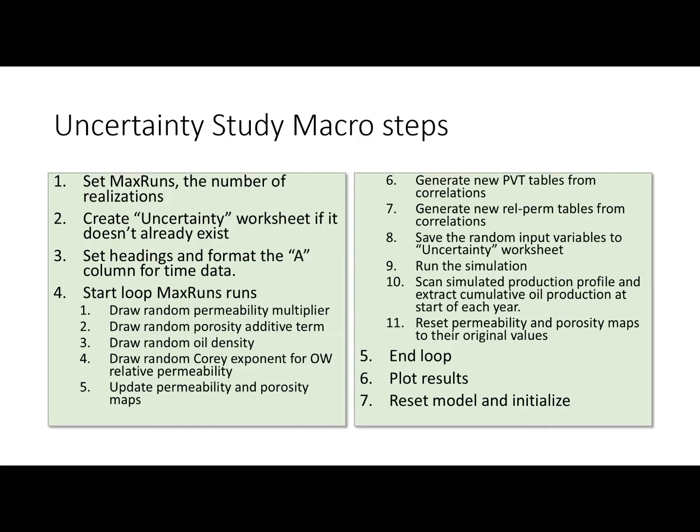It's also going to generate a random Corey exponent for the oil-water relative permeability table. Here I only use the oil Corey exponent, not the water, but you can change that too — you can do lots of changes. Once all these random input variables have been drawn, the macro updates the permeability and porosity maps and generates new PVT tables from correlations. You may have real PVT data, and you can save those real tables elsewhere in your file and copy and paste them, or modify the macro to do that.